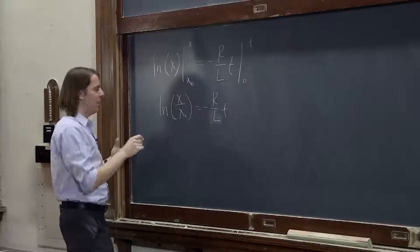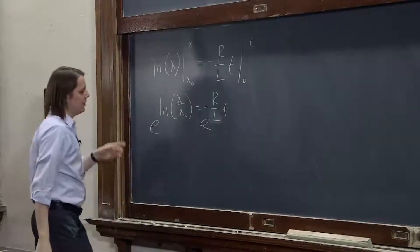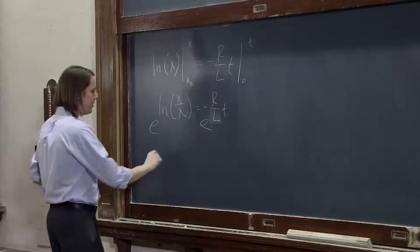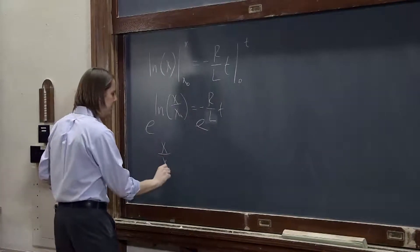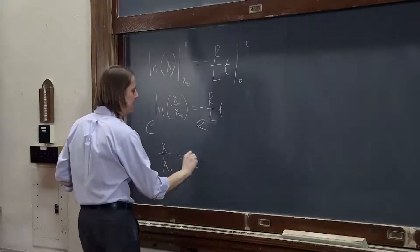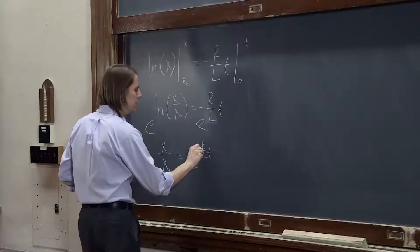and then we take the exponential of both sides, e to the natural log of something is a something, so this is x over x naught equals e to the minus r over l t,